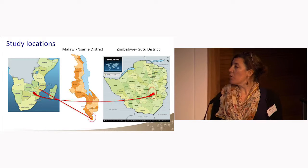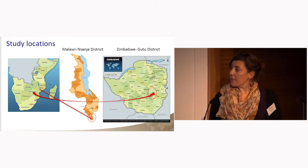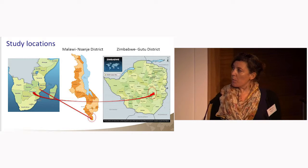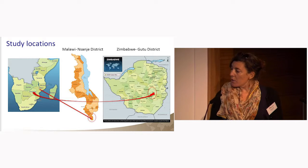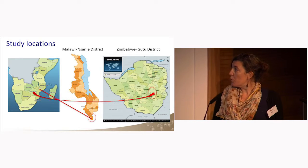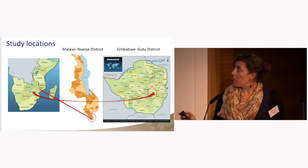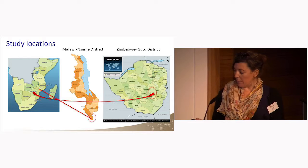Briefly, to show you where the two settings are located: NSANJ is at the bottom of Malawi, surrounded by Mozambique, and GU2 is in the middle of Zimbabwe.